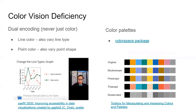It is also important to design for color vision deficiency. Looking at this example on the left, when creating line charts, make sure that the lines are distinguishable by both color and point shape. On the right, this screenshot of a color palette shows how different types of color vision deficiency can really make an impact on what the reader of a data visualization sees.